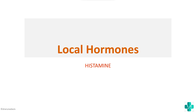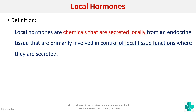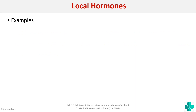First of all, what is the definition of local hormones? Local hormones are chemicals that are secreted locally from an endocrine tissue that are primarily involved in the control of local tissue functions where they are secreted. They are secreted locally and they control the local tissue functions.